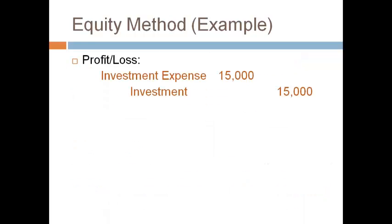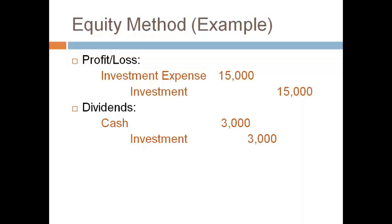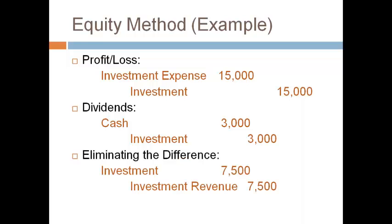Take a moment to notice the debits and credits used to record the investor's 30% share. The investee's owner's equity decreases with a loss and the investment account decreases also. The dividend is recorded as a return of capital — dividends decrease the investee's owner's equity and the investment account must also decrease. The equipment has a fair market value less than book value at time of purchase, so the investment account must increase to get to book value. No adjustment is made for the portion related to goodwill.